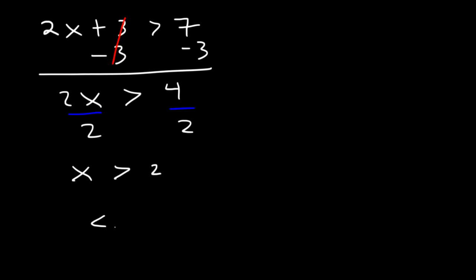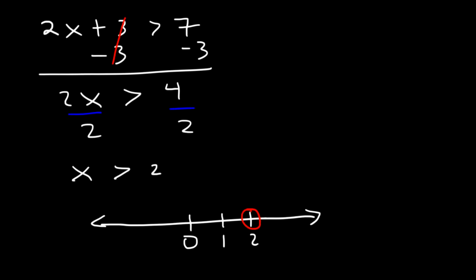Now let's plot it on a number line. Here's 2. Because it's greater than but not equal to, we're going to have an open circle. And since it's greater than, we're going to shade towards the right — that is towards positive infinity. To represent the answer using interval notation, it's from 2 to infinity.